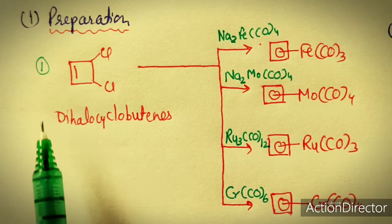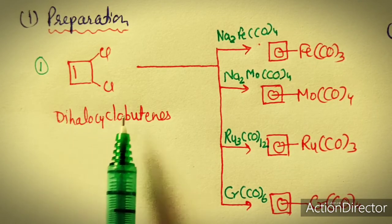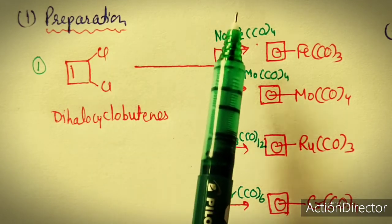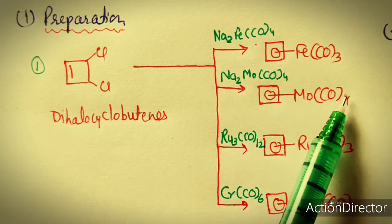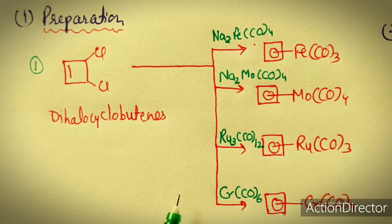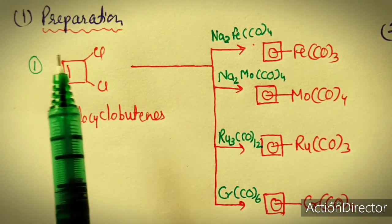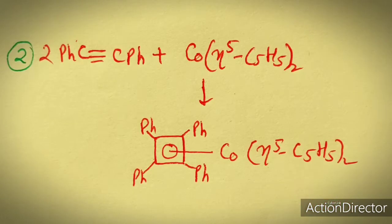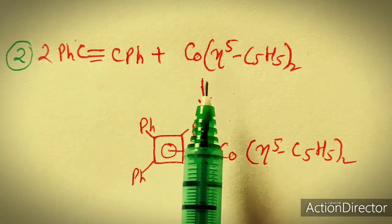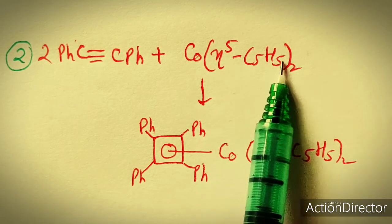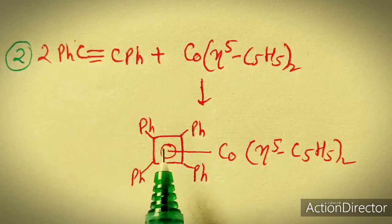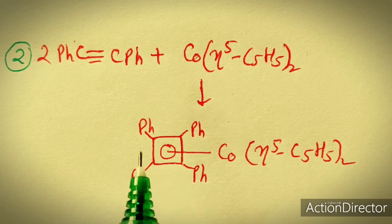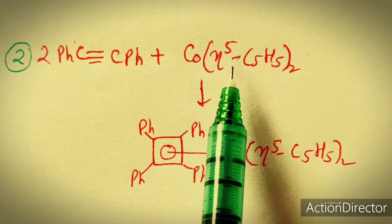Preparation of cyclobutadiene complexes: One method uses dichlorocyclobutene or halobutenes reacted with metal carbonyls such as iron carbonyl, molybdenum carbonyl, ruthenium carbonyl, or chromium carbonyl to form metal cyclobutadiene complexes. A second method involves dimerization of alkynes in the presence of metal cyclopentadienyl complexes — the alkyne dimerizes to form a cyclobutadiene-type ligand which then complexes with the metal.